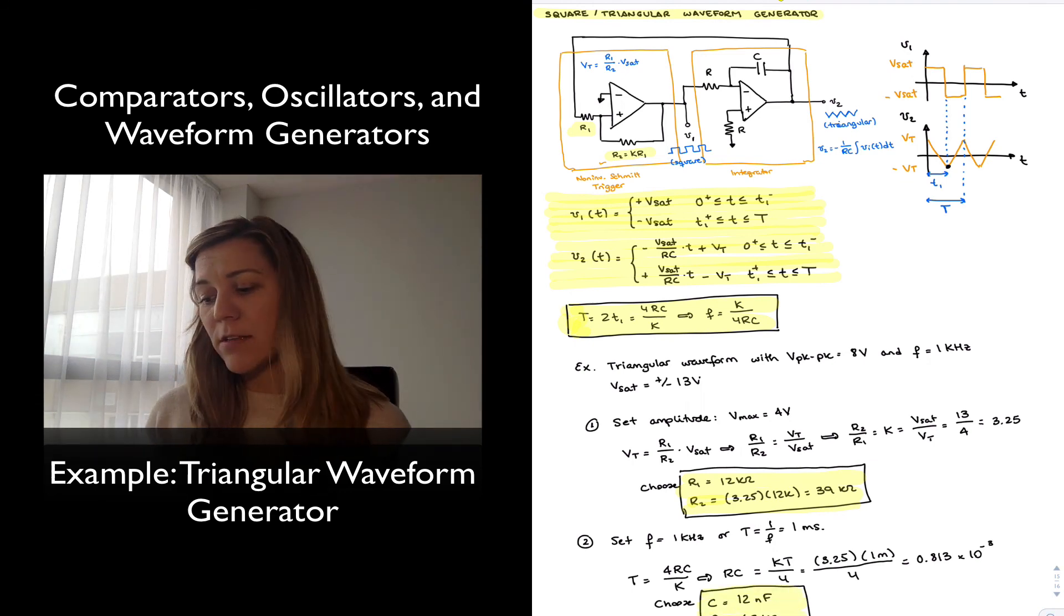But that's it. Essentially, these are the values for the circuit. And we've been able to design a triangular waveform generator that produces a triangular wave with 4 volts of amplitude or 8 volts peak to peak and a frequency of 1 kilohertz. Thank you.